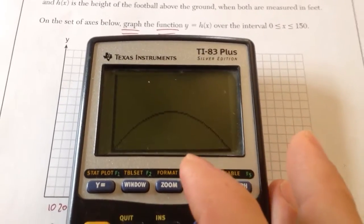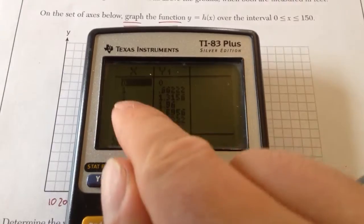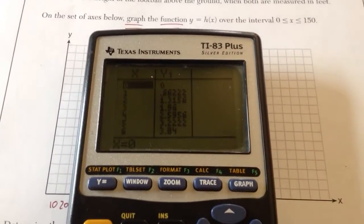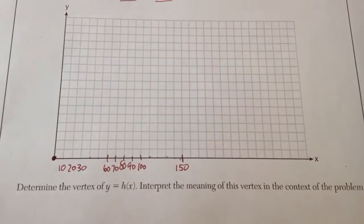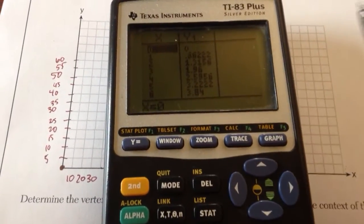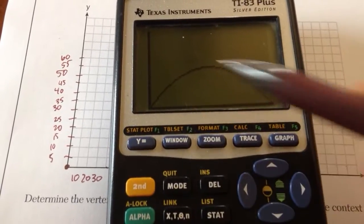So to graph this, I go to my table, and I know that at 0, my graph is at 0. So what I'm going to do is I'm going to plot 0, 0.